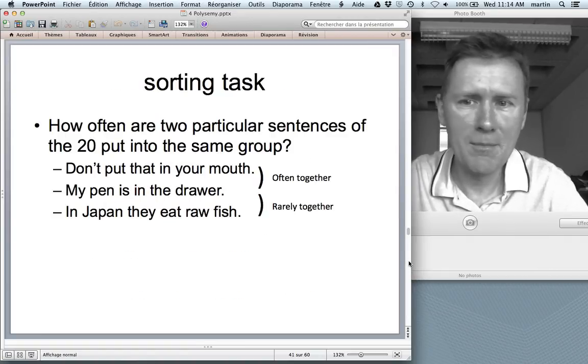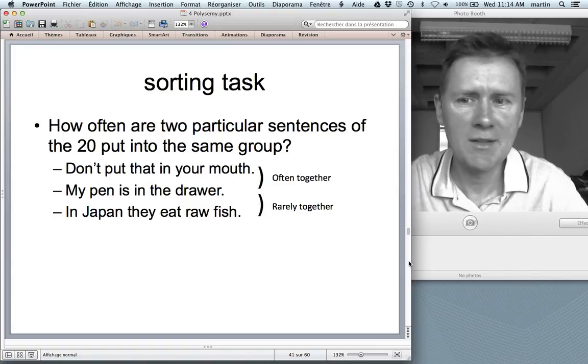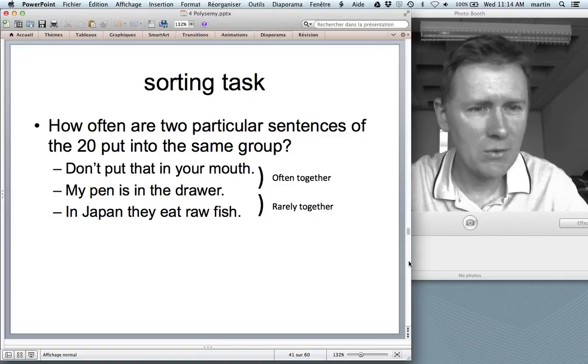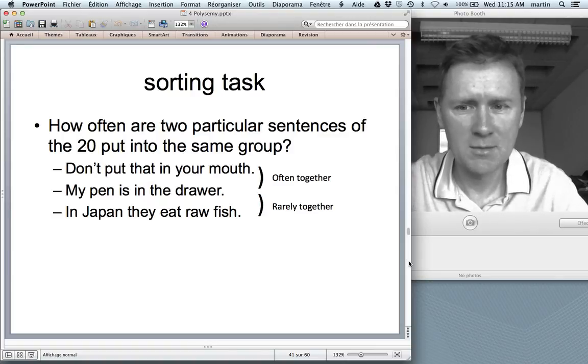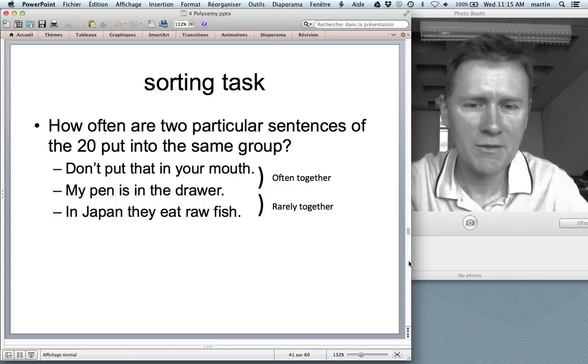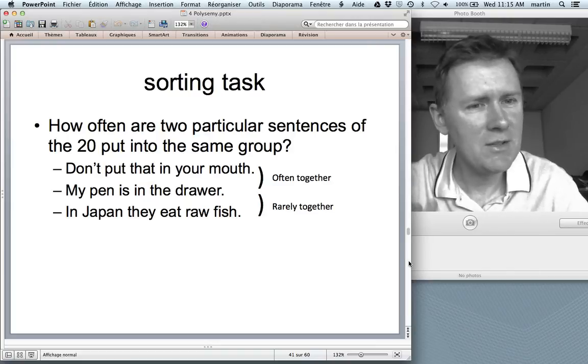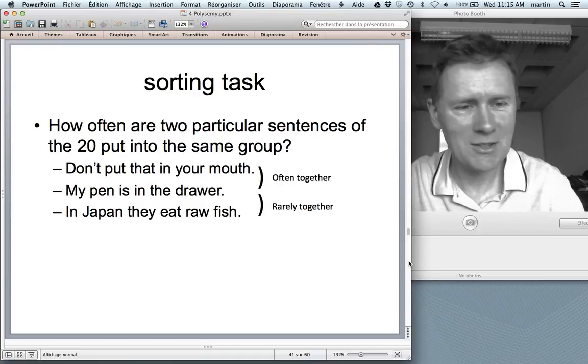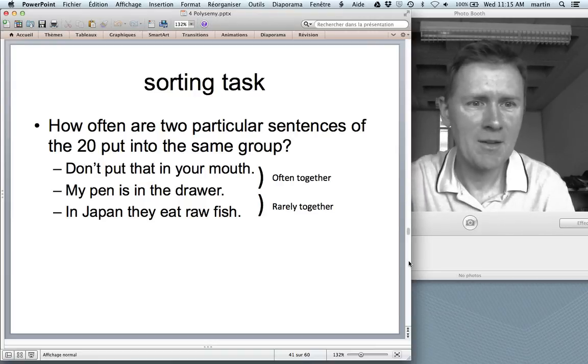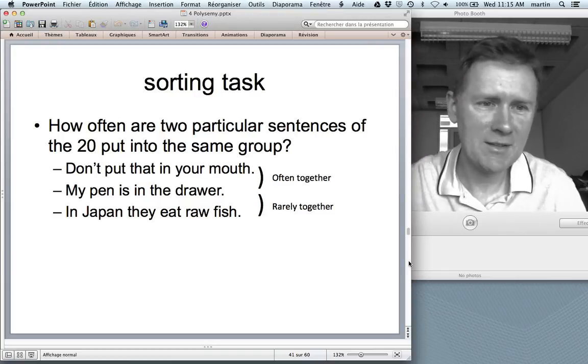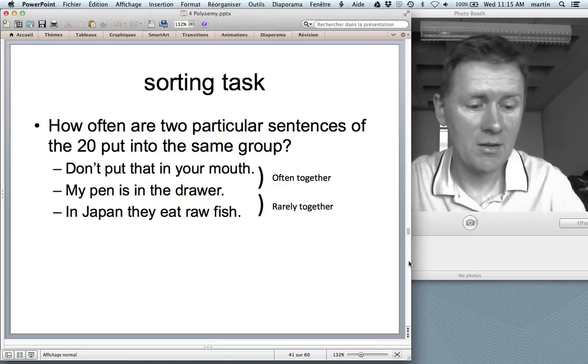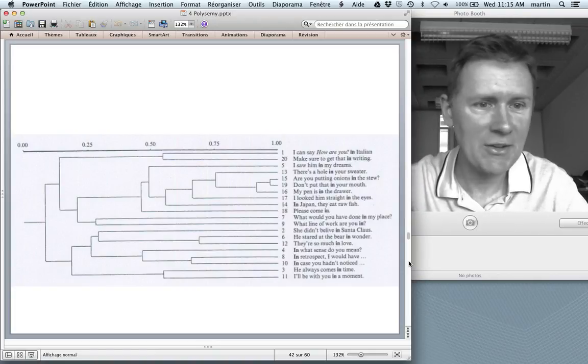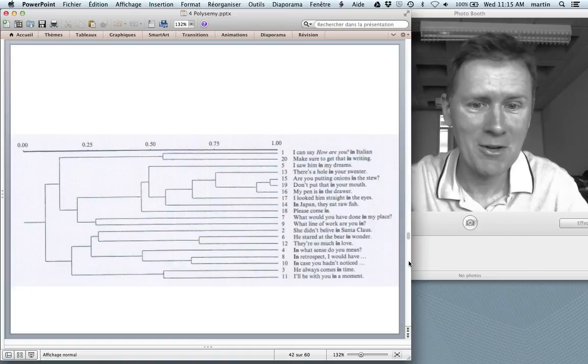So the sorting task then measures how often two particular sentences of the 20 are put into the same group. And you can imagine that, don't put that in your mouth, my pen is in the drawer. If you have 29 participants, you would find those two in the same pile, probably with a majority of participants. Another pair, my pen is in the drawer and in Japan they eat raw fish. Probably you would find those two relatively rarely together. So if you get this kind of result, you can then come up with a sort of similarity matrix, which shows how likely two particular sentences are to be grouped together, or how unlikely two sentences are to be grouped together. And what you come away with is this sort of cluster diagram, dendrogram, it's called. If you Google clustering, you'll find a lot of information about how this is done in practice.